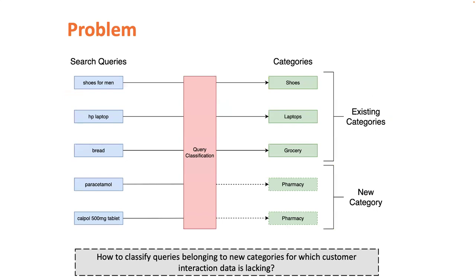Here's the problem we want to solve. For efficient retrieval and ranking of relevant products in e-commerce, search relies on accurate mapping of queries to product categories. This mapping is usually done using a query classification model, which primarily relies on textual and customer behavior signals to identify the appropriate category.